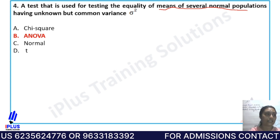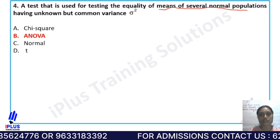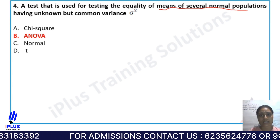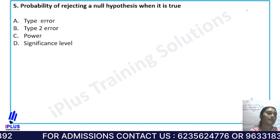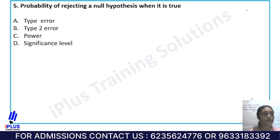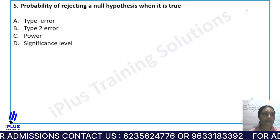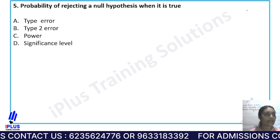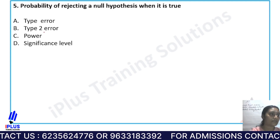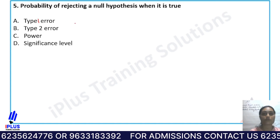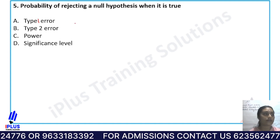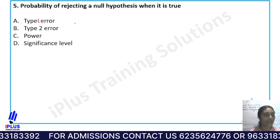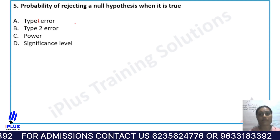Question 5: The probability of rejecting a null hypothesis when it is true is — Option A: type 1 error, Option B: type 2 error, Option C: power of a test, and Option D: significance level.